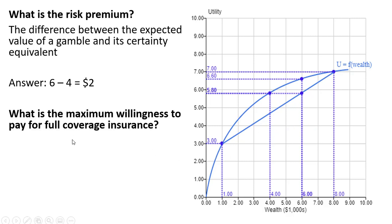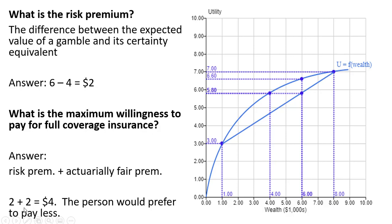What is the maximum willingness to pay for full coverage insurance? The answer here is going to be just the risk premium, which we already found is $2, plus the actuarially fair premium. So 2 plus 2 is $4. The person would prefer, obviously, to pay less.